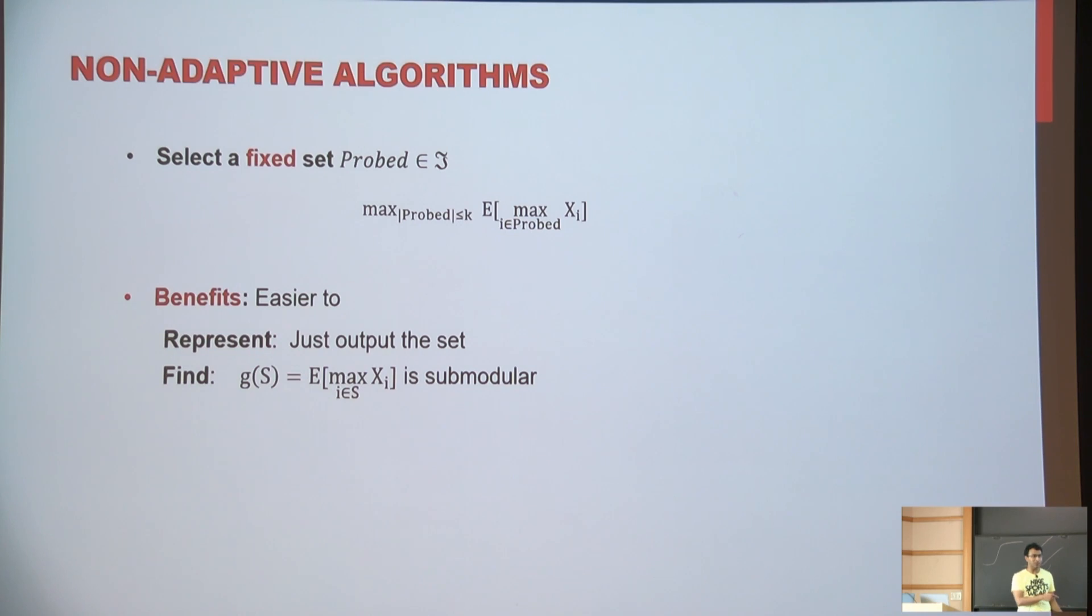The benefits, of course, are: first of all, this is very easy to represent. I just need to give you a set of size k, rather than giving you this entire decision tree, which could be exponential in size. So I'm just saying, give me the set of size at most k.